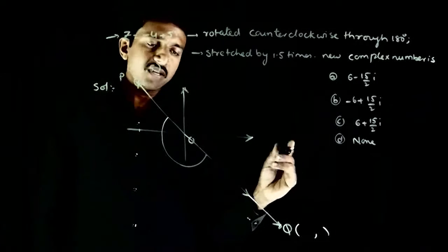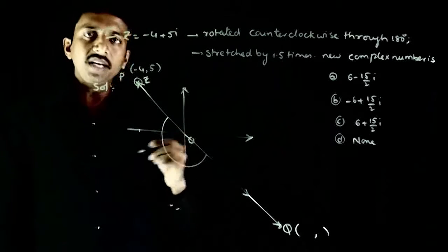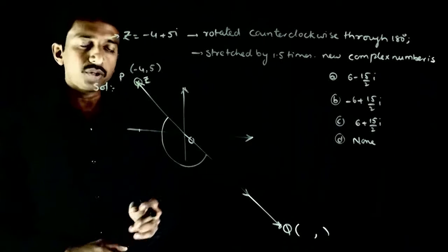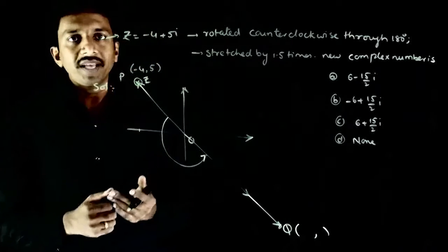Now, the concept is if z, if a complex number z has to be rotated in counterclockwise direction through an angle of theta, so it just has to be multiplied with e^(iθ).